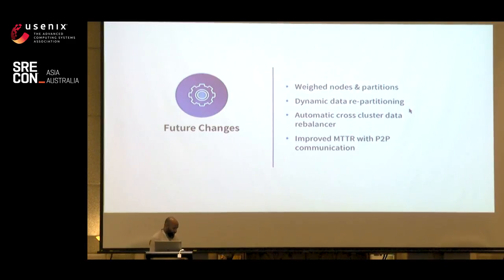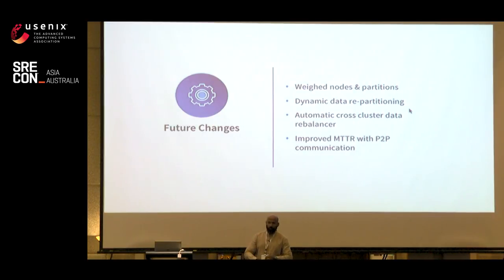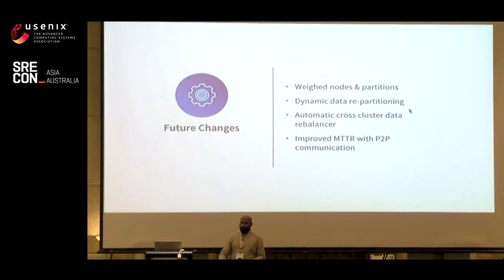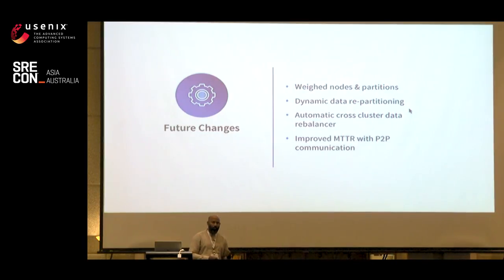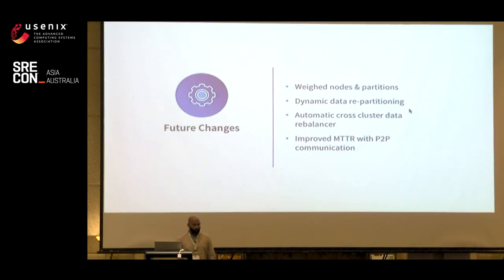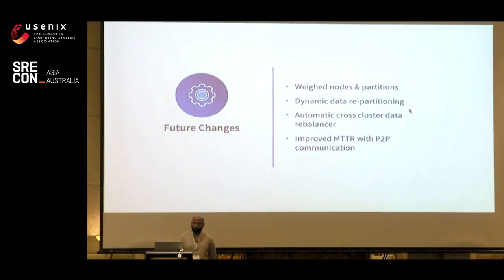Here are some of the future changes we're working on. Right now, Helix considers all nodes as homogeneous — it doesn't assign weights to partitions or nodes, so a 64 GB disk is treated equivalently to a 128 GB disk or a 2 TB disk. We're working on making Helix weight-aware. We are also working on dynamic data repartitioning, and planning on a cross-cluster data balancer — right now all data rebalancing decisions are taken by SREs, but we want to automate that. Finally, improving mean time to recovery using P2P communication, which is the RPC part mentioned earlier.